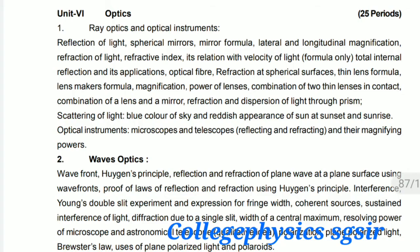Unit 6 is Optics, with two chapters. In Ray Optics and Optical Instruments, we discuss reflection, refraction, mirrors, lenses, refractive index, prism, scattering of light, why the sky is blue, microscopes, and telescopes. In Wave Optics, we discuss Huygens' principle, reflection and refraction of plane waves, interference via the double-slit experiment, diffraction through a single slit, and polarization. Units 5 and 6 together carry 17 marks in the final examination.